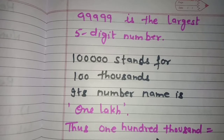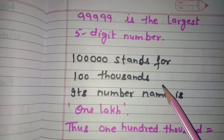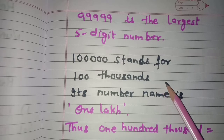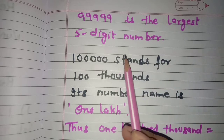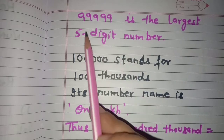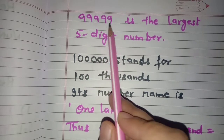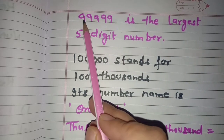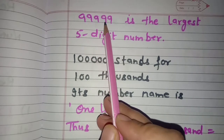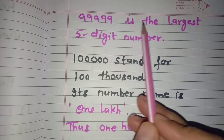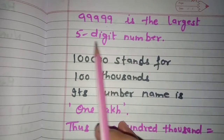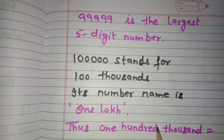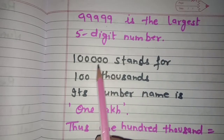Now, which is the largest five digit number? To write the largest five digit number, we use the largest digit, which is nine, repeated five times. So the largest five digit number is ninety nine thousand nine hundred ninety nine — 99,999.